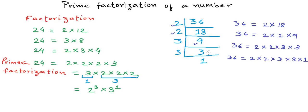So 36 is nothing but 2 into 2 into 3 into 3 into 1. We stop as soon as we get 1 because 1 cannot be reduced any further. Now 1 is not a prime number — the smallest prime number is 2 — so in prime factorization we do not keep 1. The prime factorization is 2 into 2 into 3 into 3, which in exponent form is 2 to the power 2 multiplied by 3 to the power 2.